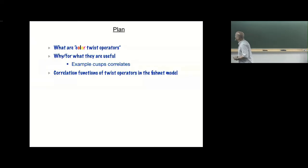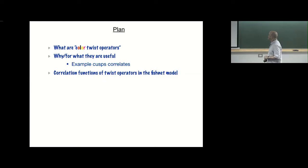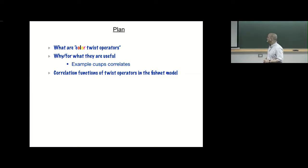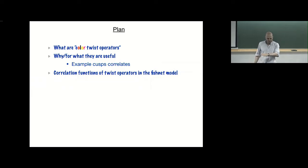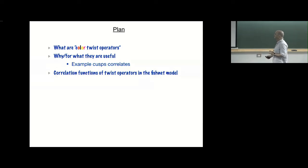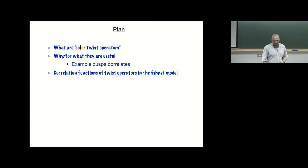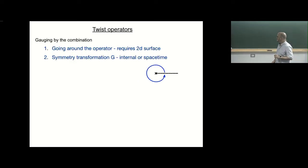What I'll talk about is how to compute correlation functions of twist operators in the fishnet model and how to rewrite them in terms of the most useful integrable data. But the idea about twisting is much more general. I want to start by zooming out and giving the idea, because it turned out to be new, and only then go to a specific model. The plan is: I'll start by describing what I call color twist operators in general, then discuss why they are useful. Most of the talk will actually use an example which is different from what we ultimately aim for — the cusp — which is even simpler. In the last five to ten minutes, we'll finally apply it to correlation functions of twist operators.